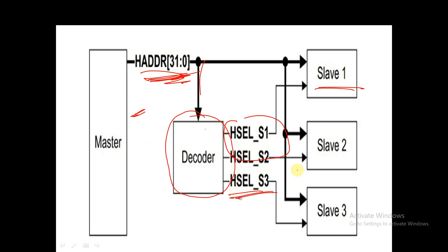Using the HSELx signal, the slave is being selected by the master and communication is established between the master and the selected slave. So when a single master and multiple slaves are being used, a decoder is used for decoding the address, and according to the decoded address, the master can select a particular slave and establish communication using the HSELx signal.